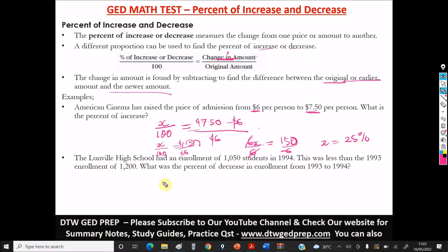So now, let's look at this final example here. It says, the Luneville High School had an enrollment of 1,050 students in 1994. This was less than the 1993 enrollment of 1,200. What was the percent of decrease in enrollment from 1993 to 1994?